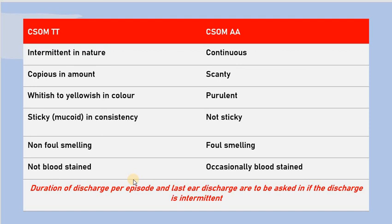The discharge in CSOM-TT is whitish to yellowish in color. When there is infection it becomes yellowish, but usually it is whitish, with plenty of whitish discharge coming from the external canal. The discharge in CSOM aticoantral type is usually yellowish and purulent. Occasionally the discharge is greenish due to Pseudomonas infection in CSOM aticoantral type.